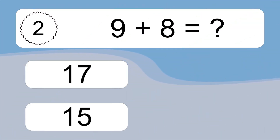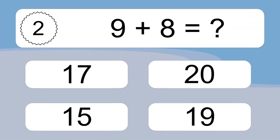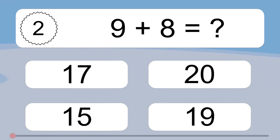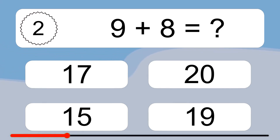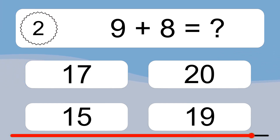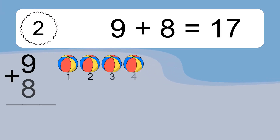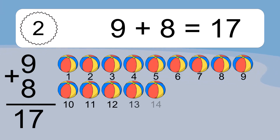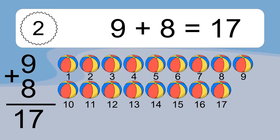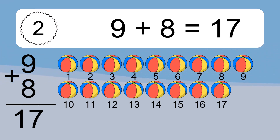9 plus 8 equals what? 9 plus 8 equals 17. Let's count it: 1, 2, 3, 4, 5, 6, 7, 8, 9, 10, 11, 12, 13, 14, 15, 16, 17.